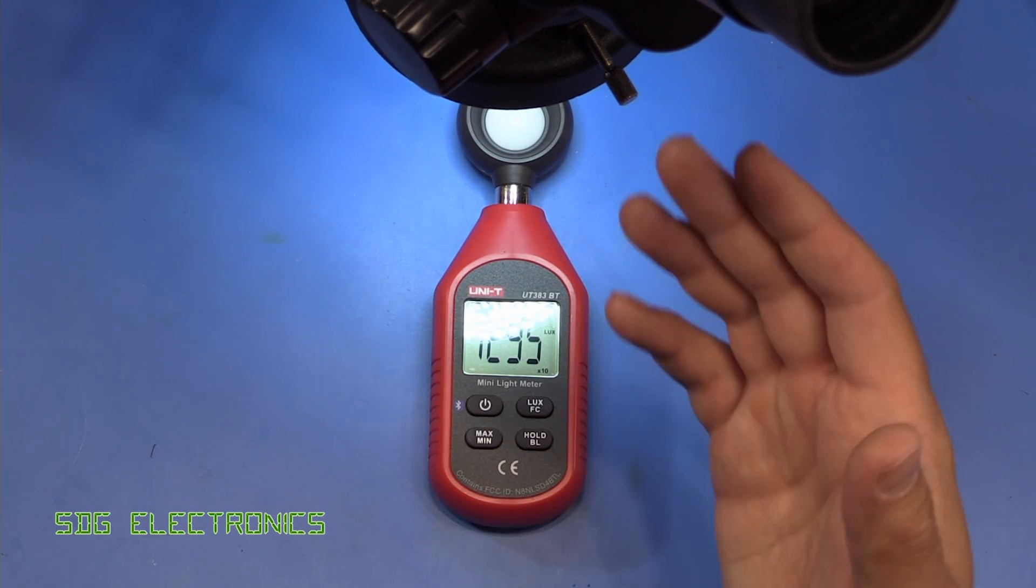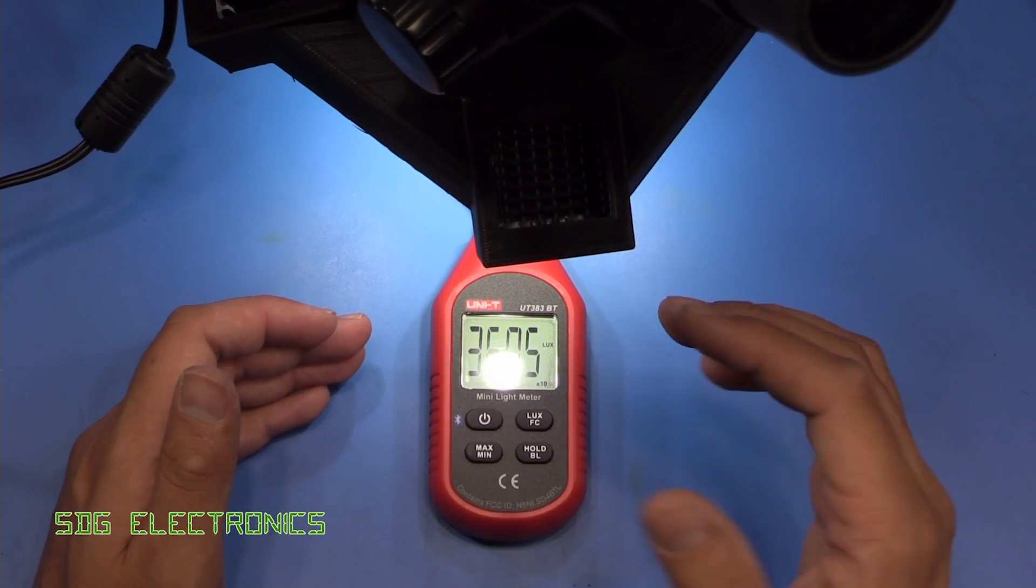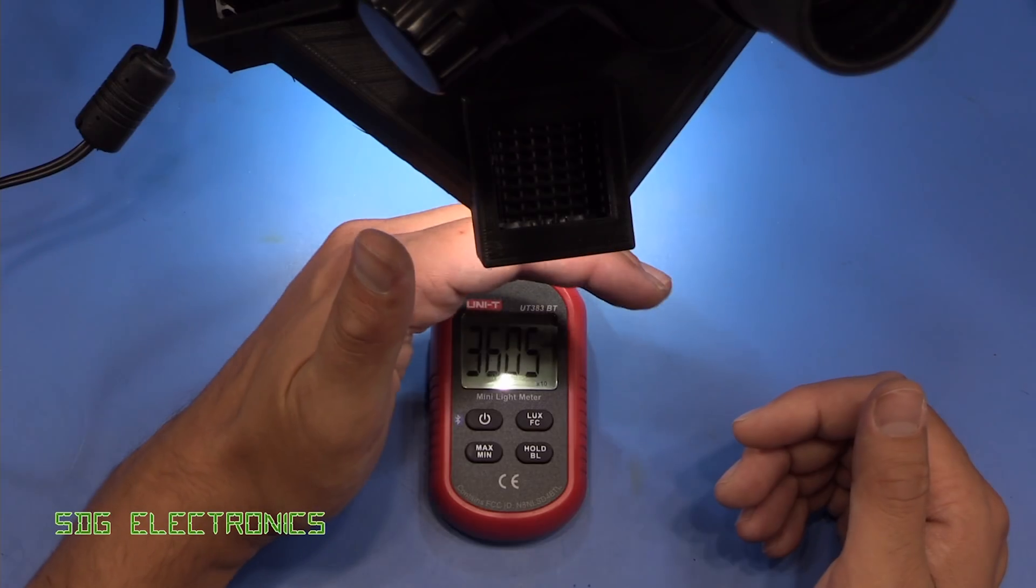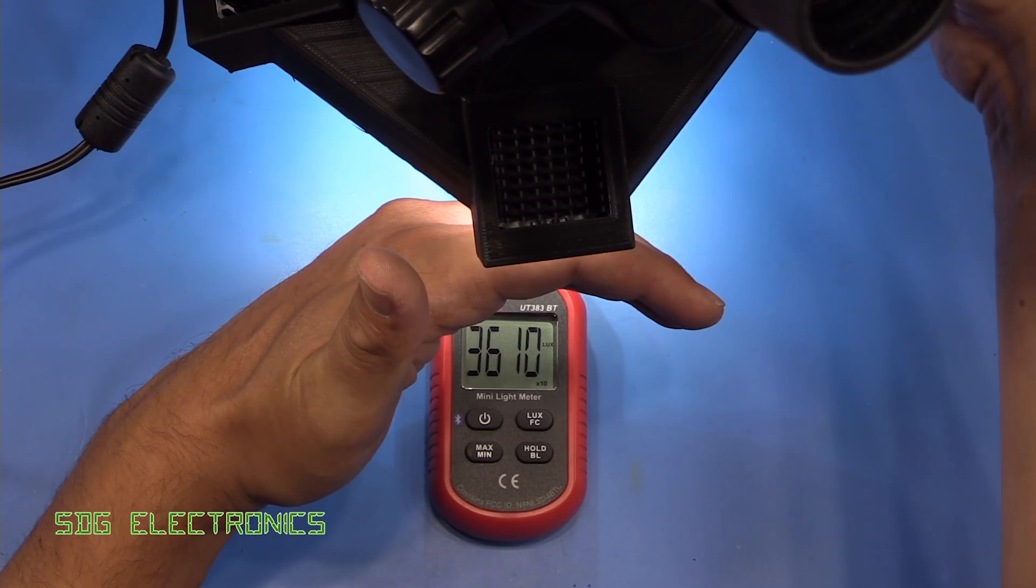Let's attach the new ring light to the microscope. And so once again, we've got the sensor directly under the centre of the ring light. And this time we're at 36,000 lux at the lowest brightness.